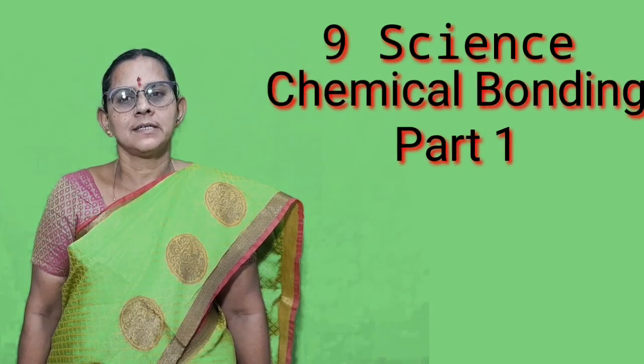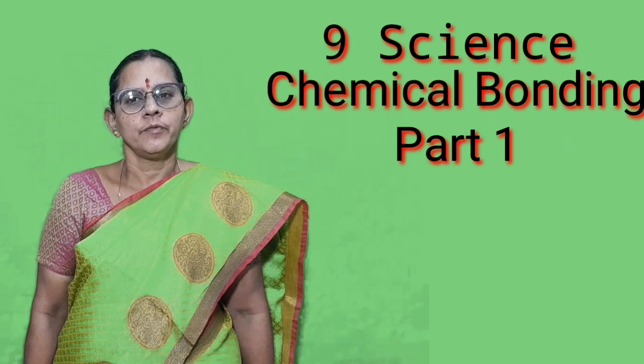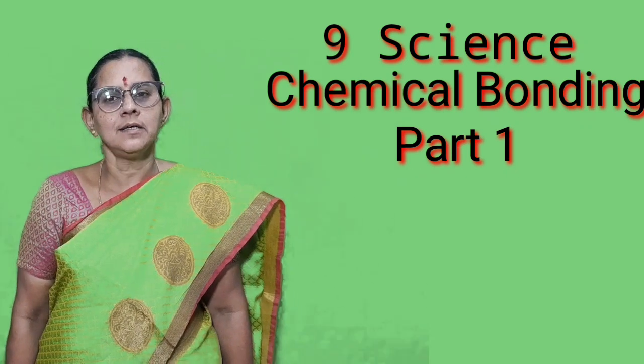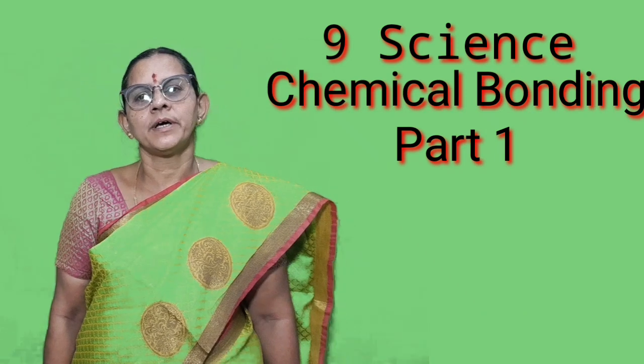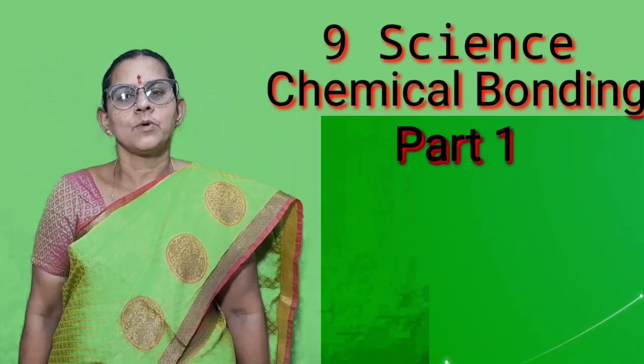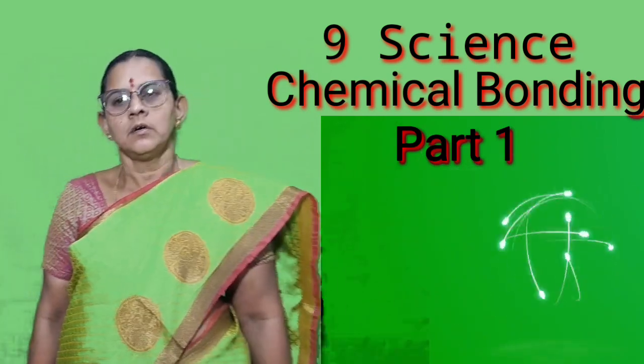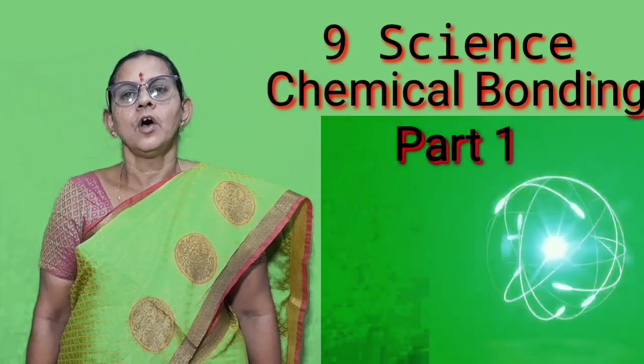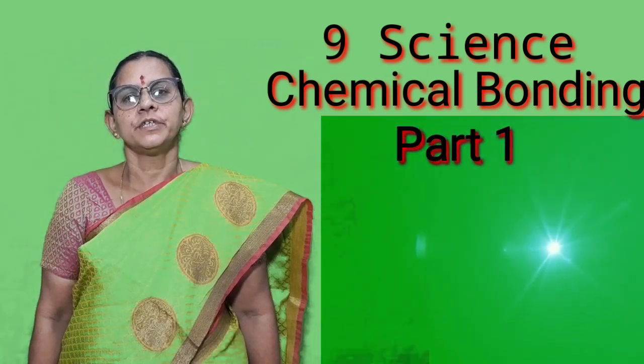Hi children, in this video we are going to see about chemical bonding, ninth standard science. In this lesson we are going to see how atoms and molecules are formed from chemical bonds, the octet rule of eight, and different types of bonds. We are going to see how atoms are the building blocks of all matter and how many atoms exist.